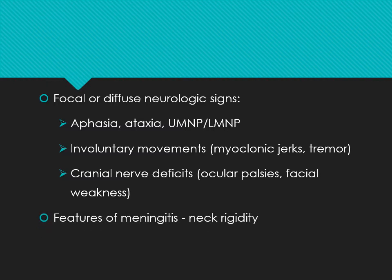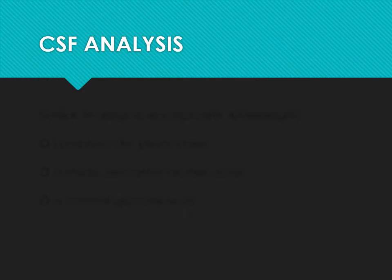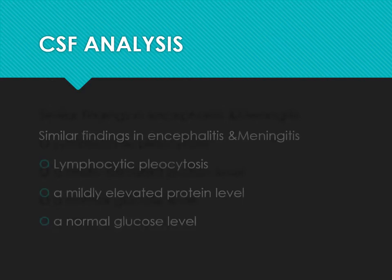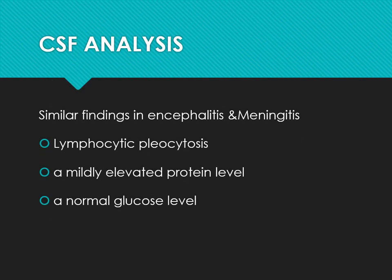With involvement of the meninges, there will be neck rigidity. The most important sample when the CNS is involved is the cerebrospinal fluid (CSF). In encephalitis, there will be lymphocyte predominance. In bacterial causes, neutrophil count goes high. For viral causes, lymphocyte count will be high, with mildly elevated protein levels and normal glucose levels.